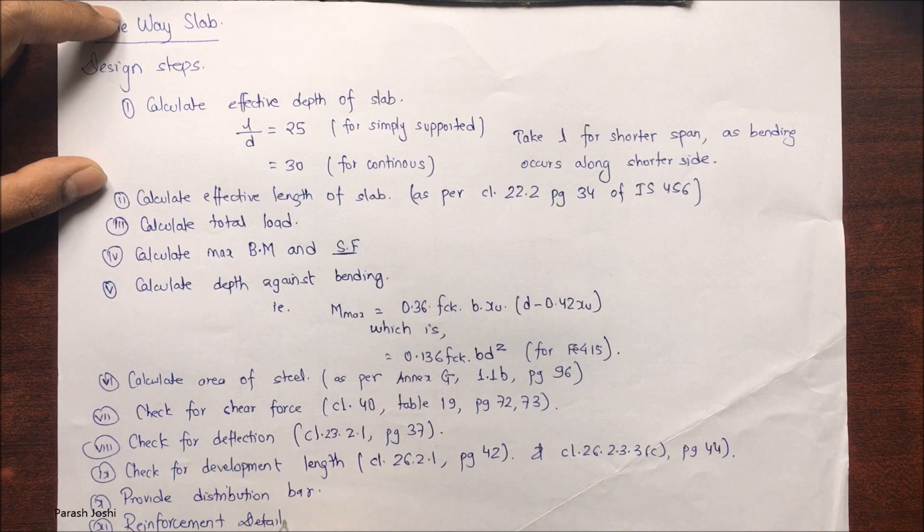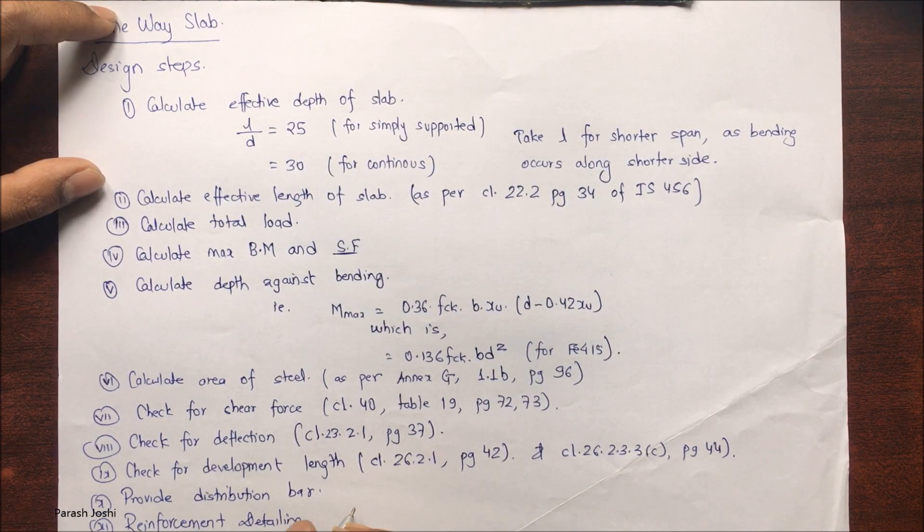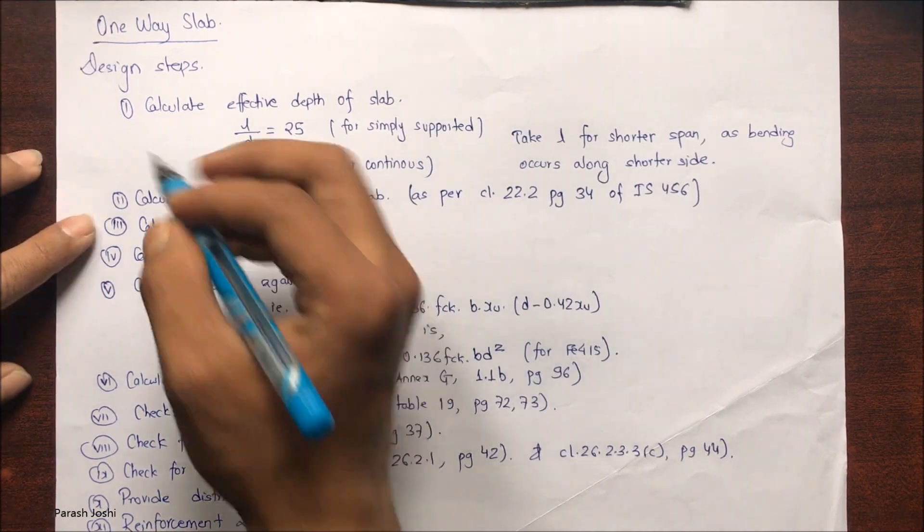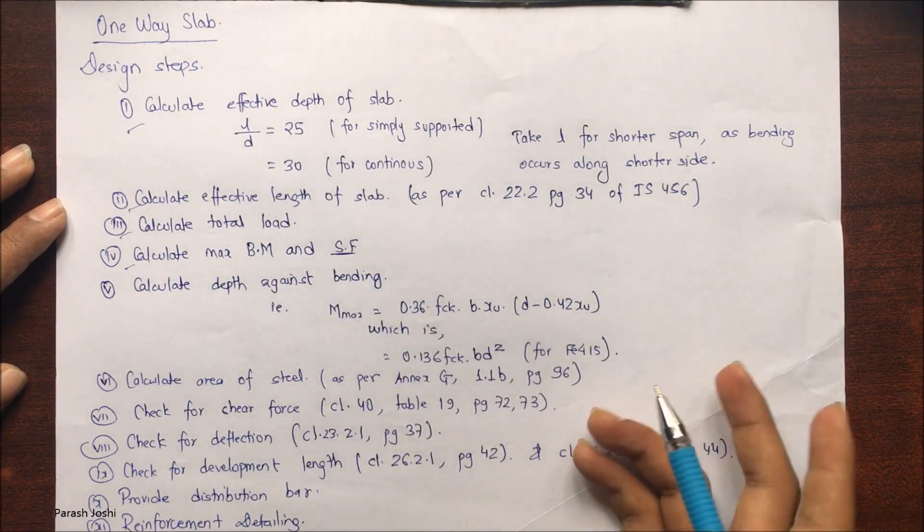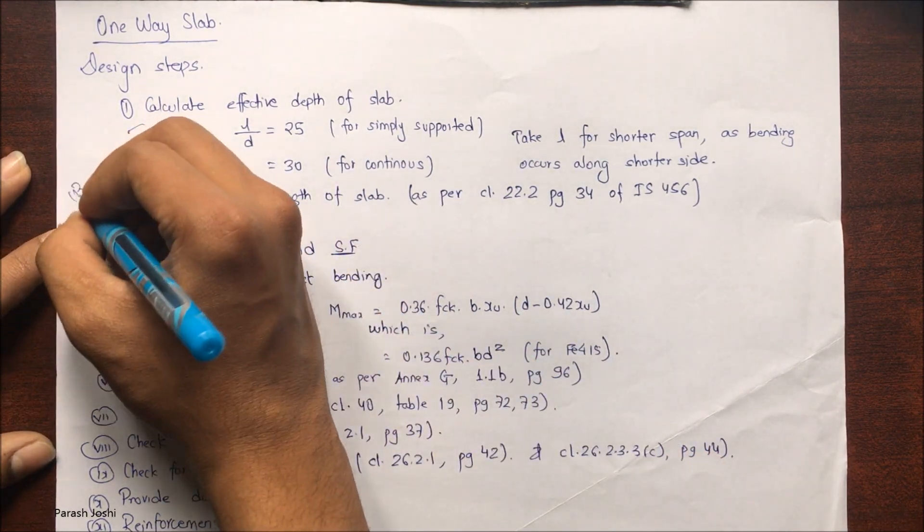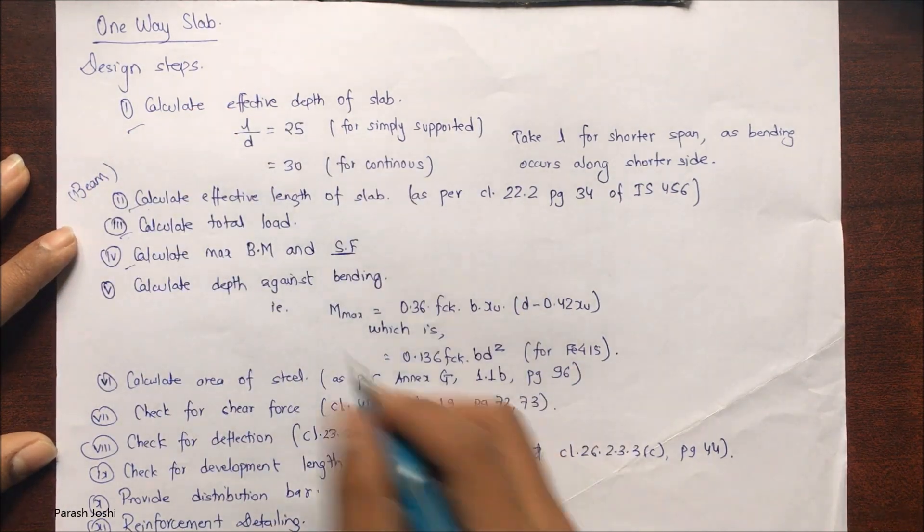Step one, step three, and step four are similar to that of the beam, which we have done in previous videos. From the fifth step it is different. Make sure that D is the effective depth, and then we have to calculate the area of steel.